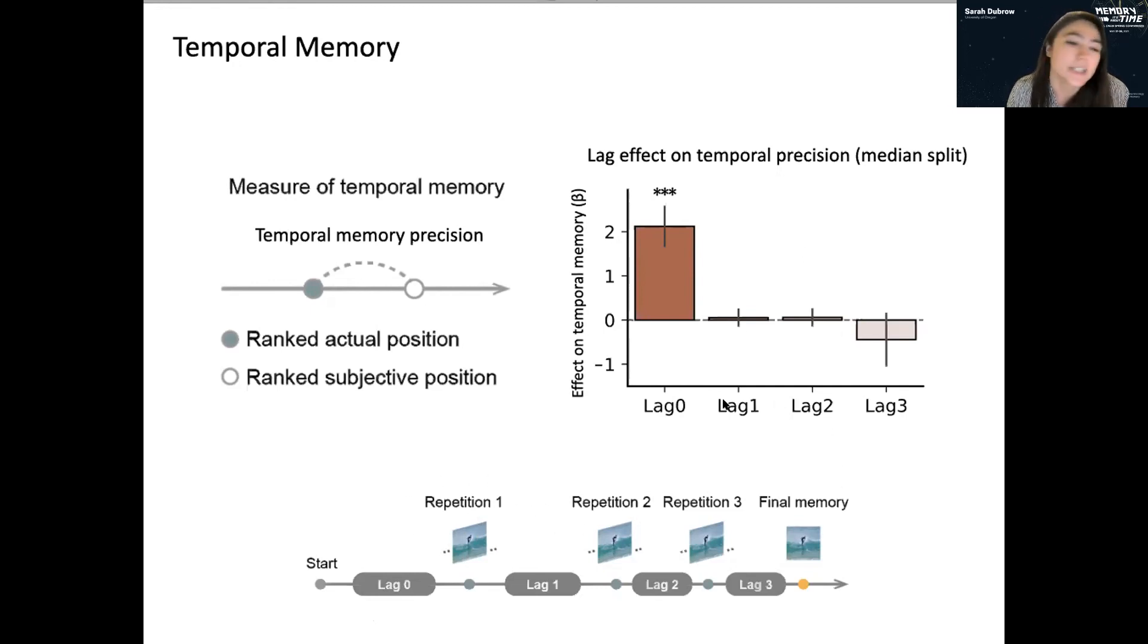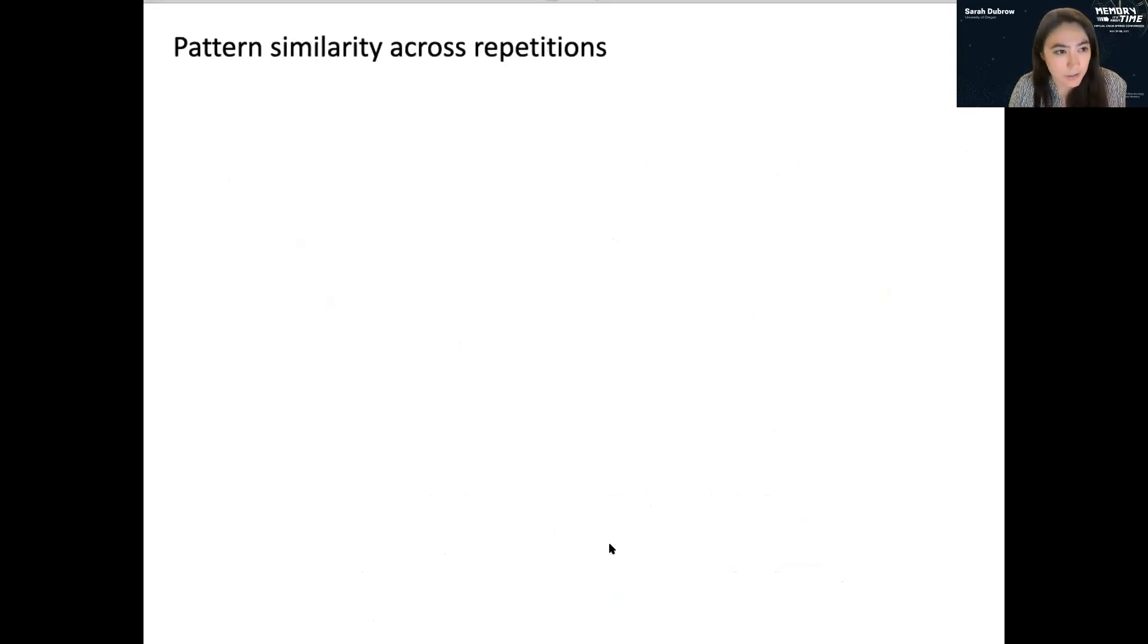So that kind of makes sense because it's basically saying the later in the experiment you saw it for the first time, the better your memory for when you saw it the first time is. But interestingly, there's no effect of spacing and there's not really an effect of the last lag from repetition to final memory, which is nice because it suggests that people were really able to hone in more on the first repetition, which is what we're asking temporal memory for.